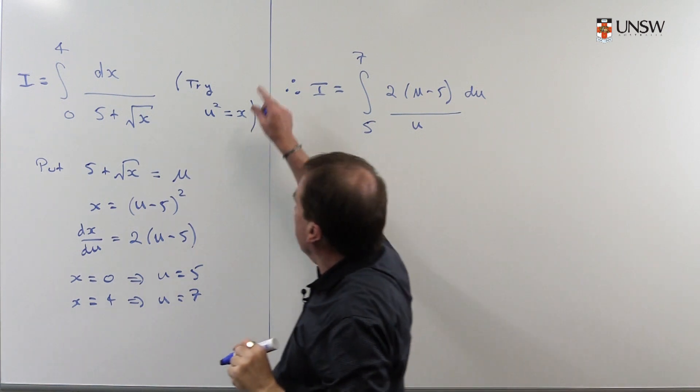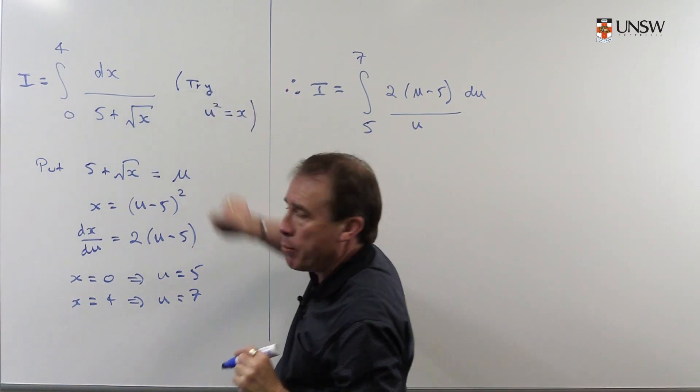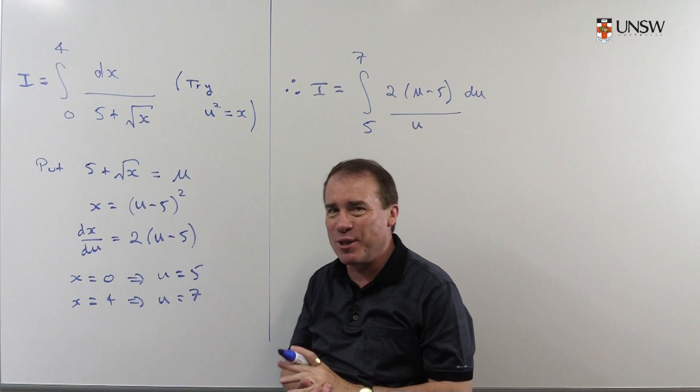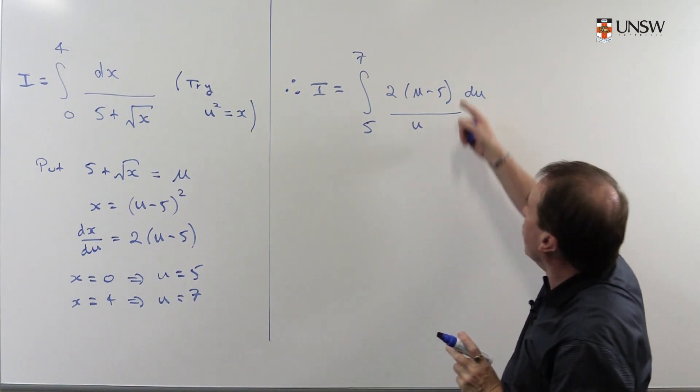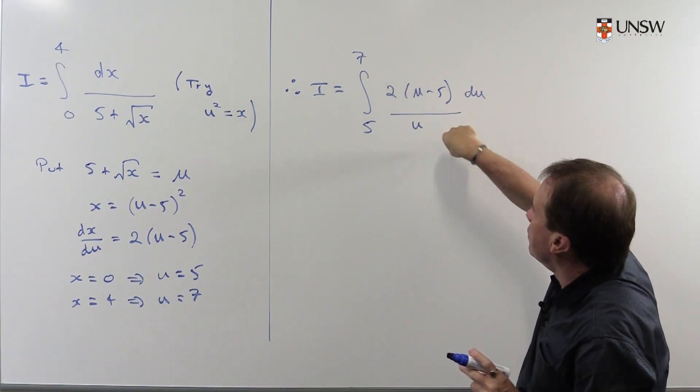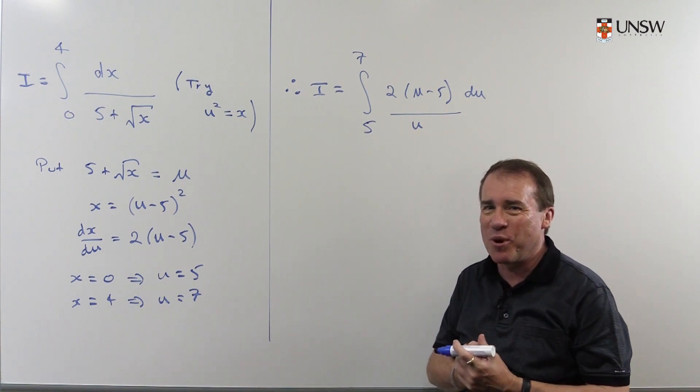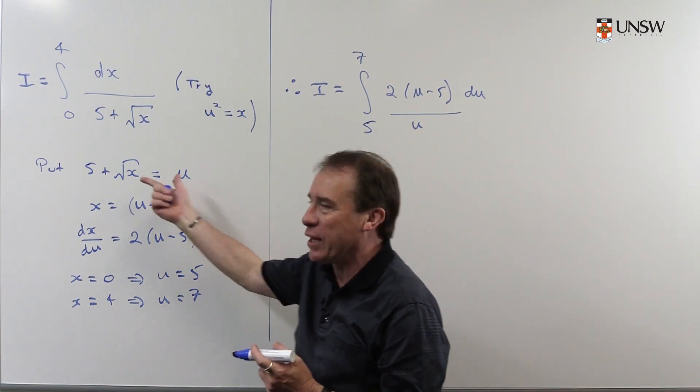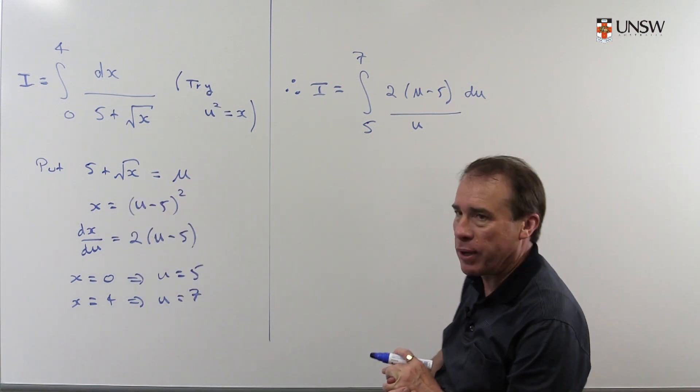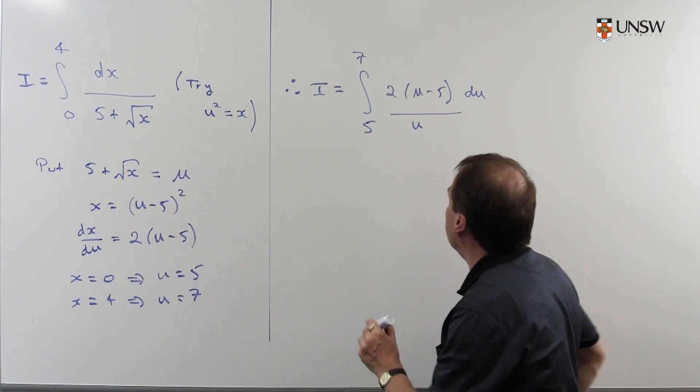And by the way you might like to, as I said, you should try doing this other method and compare and contrast and you'll see that at this stage you end up with factors of u in the denominator that then you have to do division and it makes it more complicated. So this actually is a slightly easier, perhaps less obvious, but slightly easier way of doing this problem.